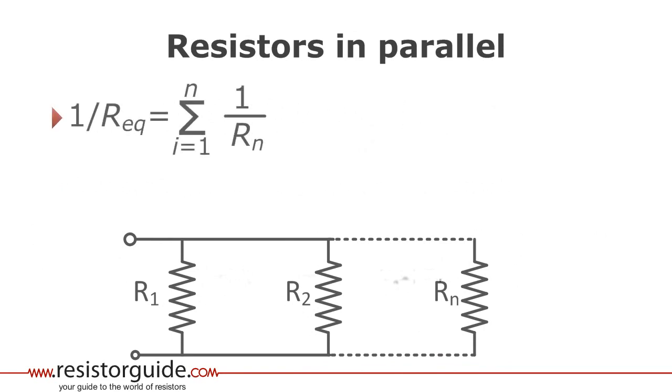Here the inverse of the equivalent resistance is equal to the sum of the inverse of every individual resistor in parallel. So 1 divided over the equivalent resistance is equal to 1 divided over R1 plus 1 over R2 until 1 over Rn.